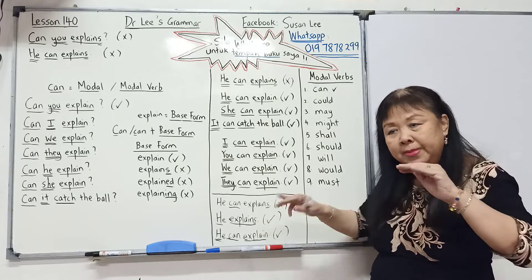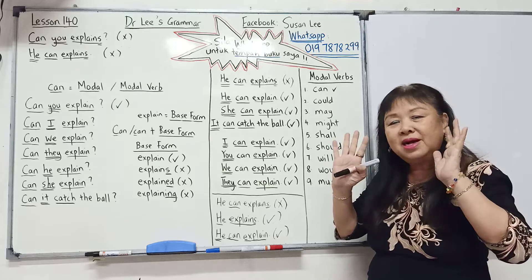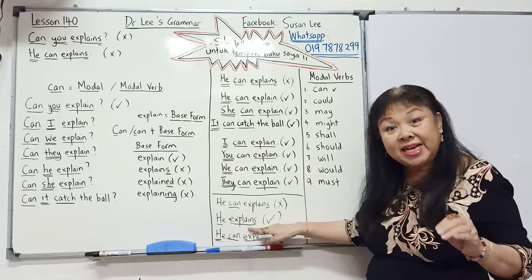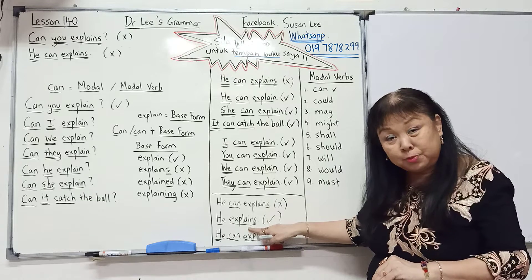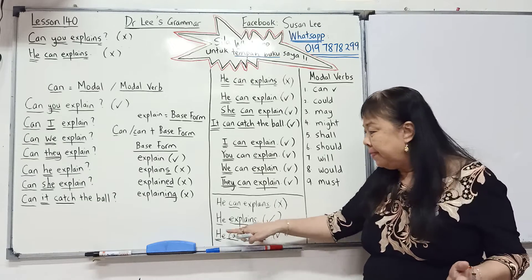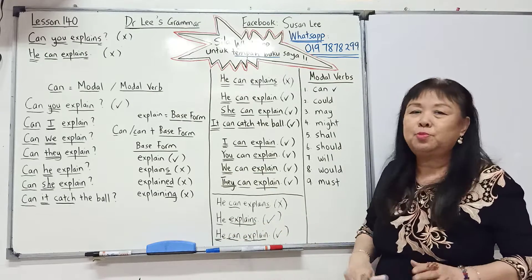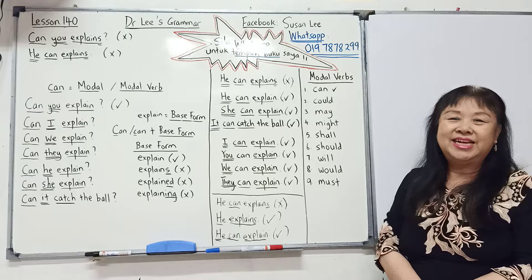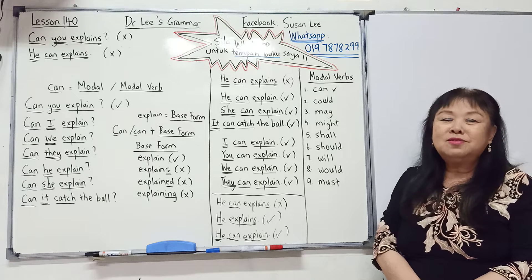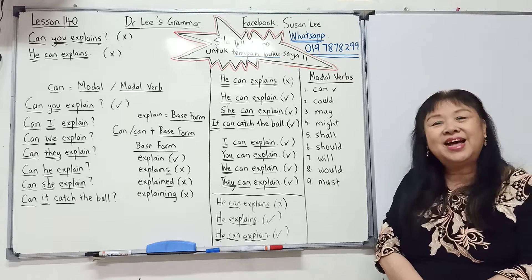Jadi jangan keliru. He — kalau tidak ada 'can', terus kata kerja 'explain', maka tambah S. He, she, it — tapi kalau kamu gunakan he dan kamu tulis 'can', maka 'explain' itu tidak ada S lagi. Peraturan: can diikuti dengan kata asal.